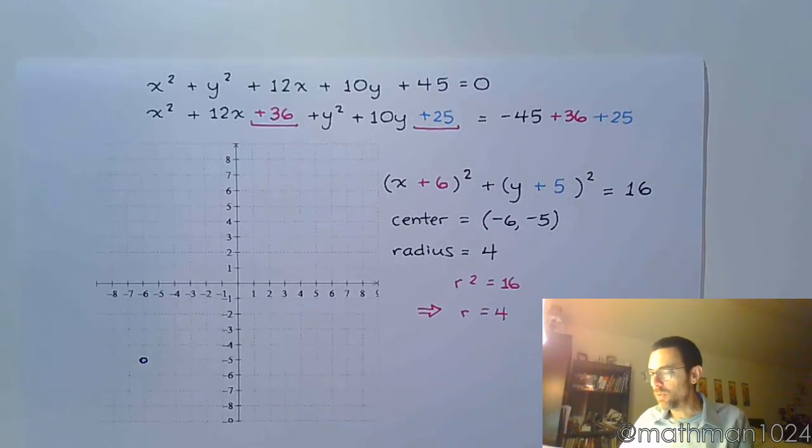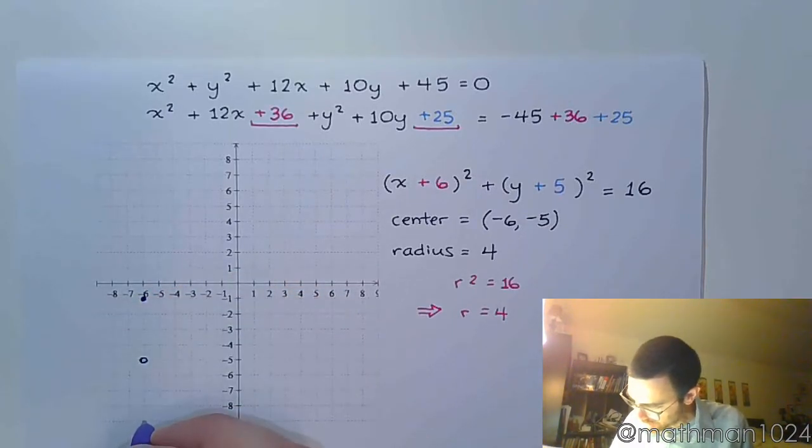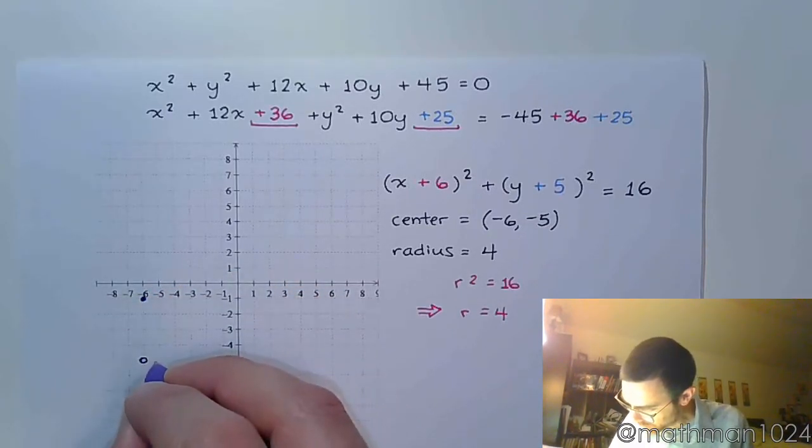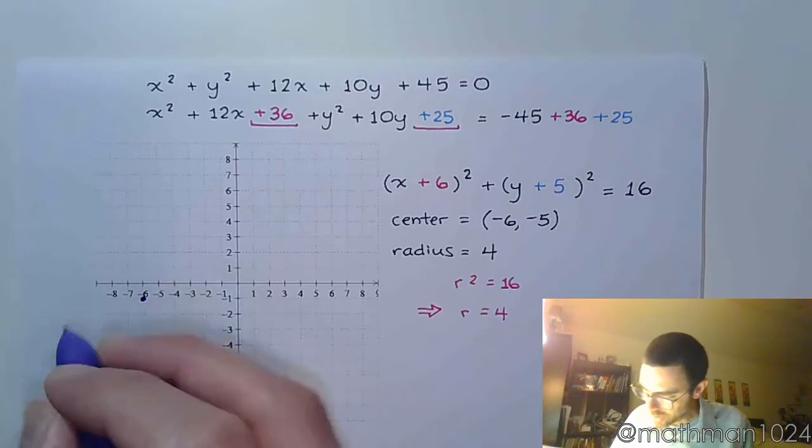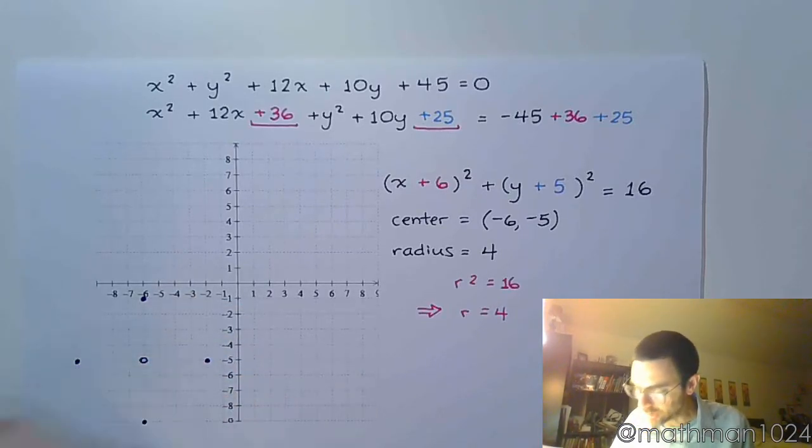We have a radius of 4. So in all 4 directions, we're going to go 4 units. So that's up 4, down 4, 1, 2, 3, to the right 4. And 1, 2, 3, left 4 is just a little bit off the grid. But we can still make it work.